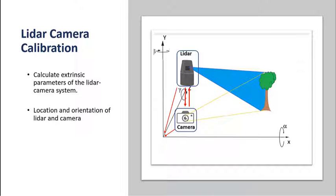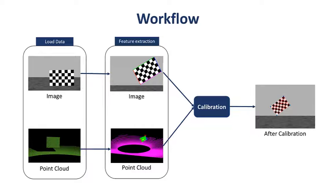LiDAR Toolbox provides all the necessary functions to perform LiDAR camera calibration. We can load and extract checkerboard features from images and corresponding point clouds, then use these features to estimate transformation between camera and LiDAR.